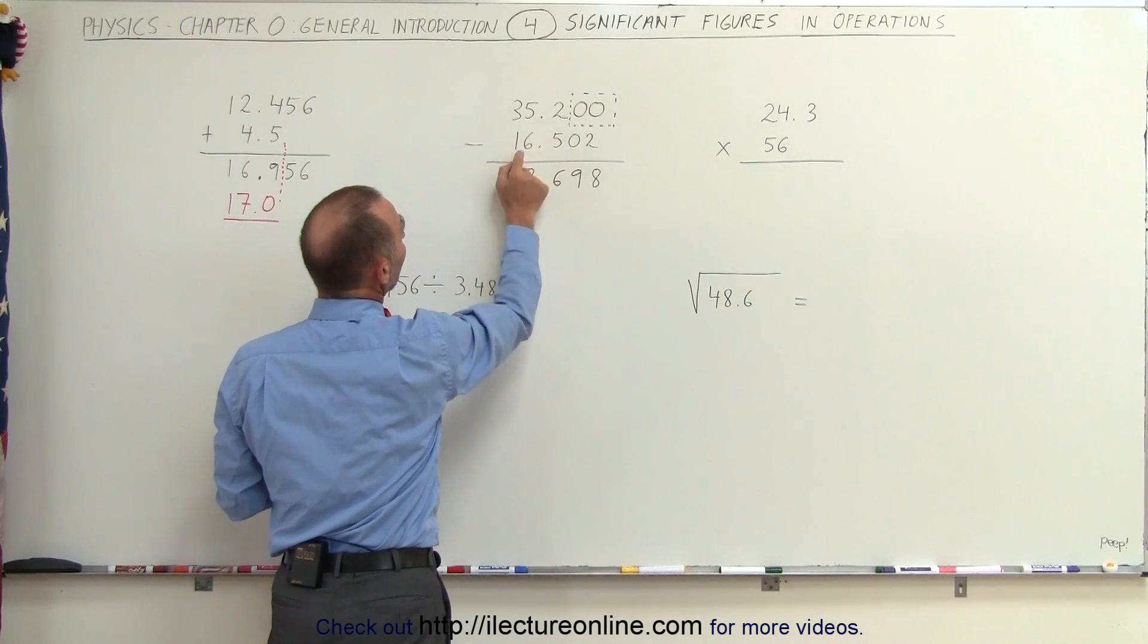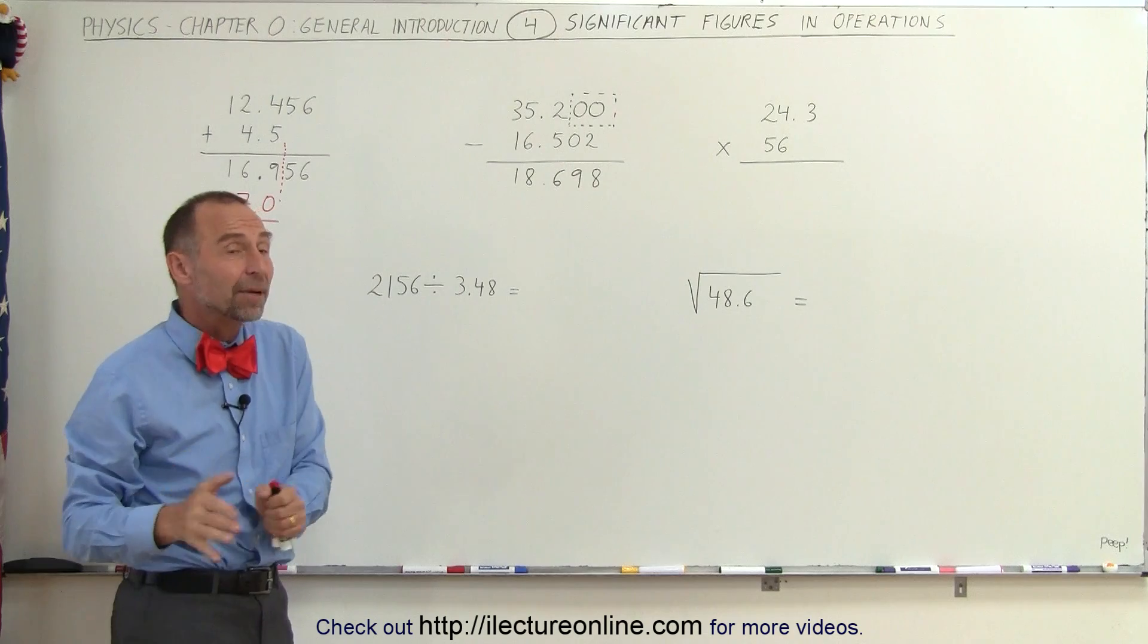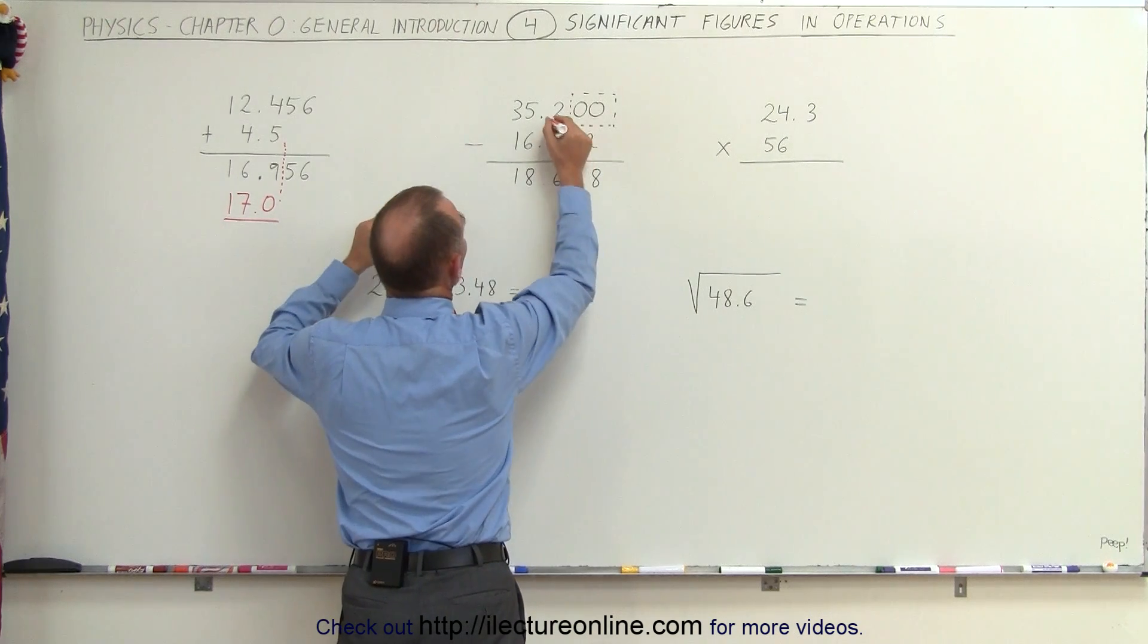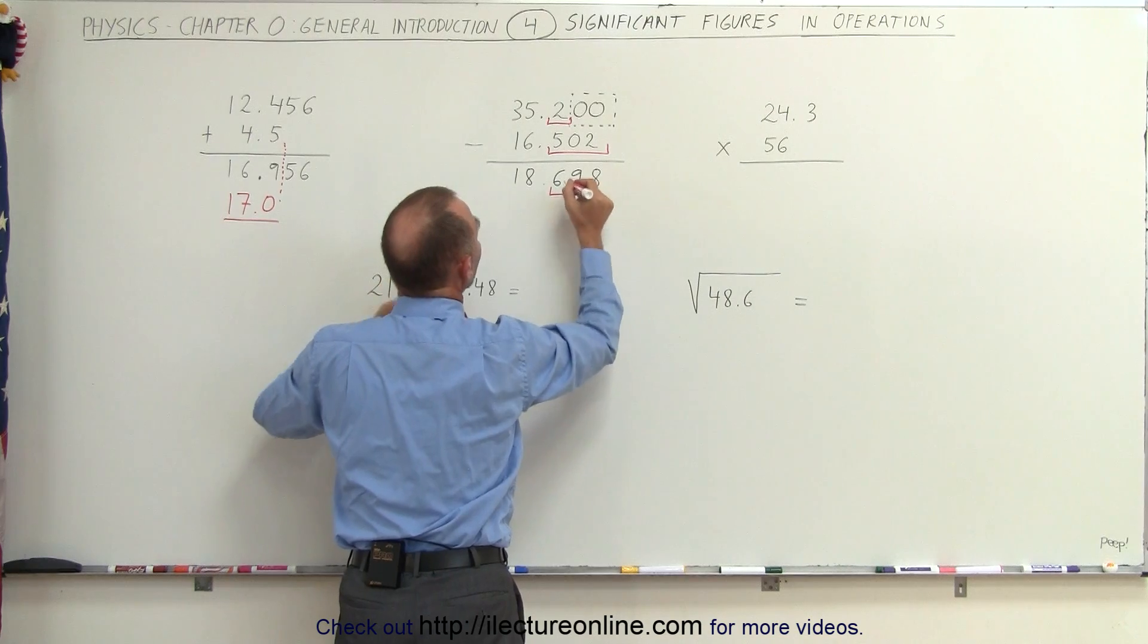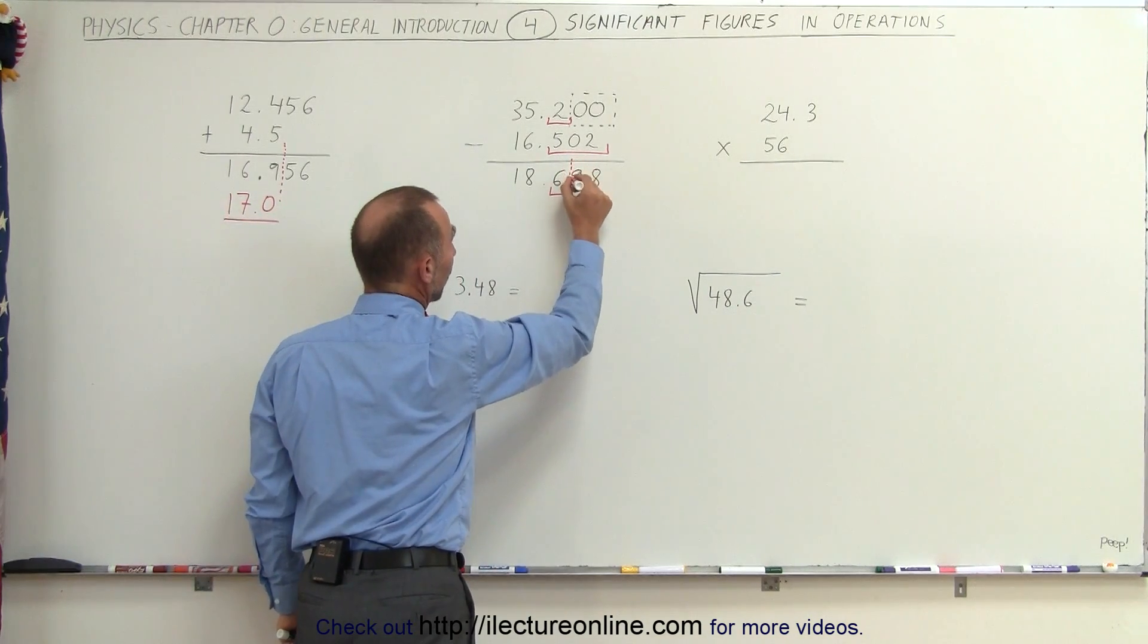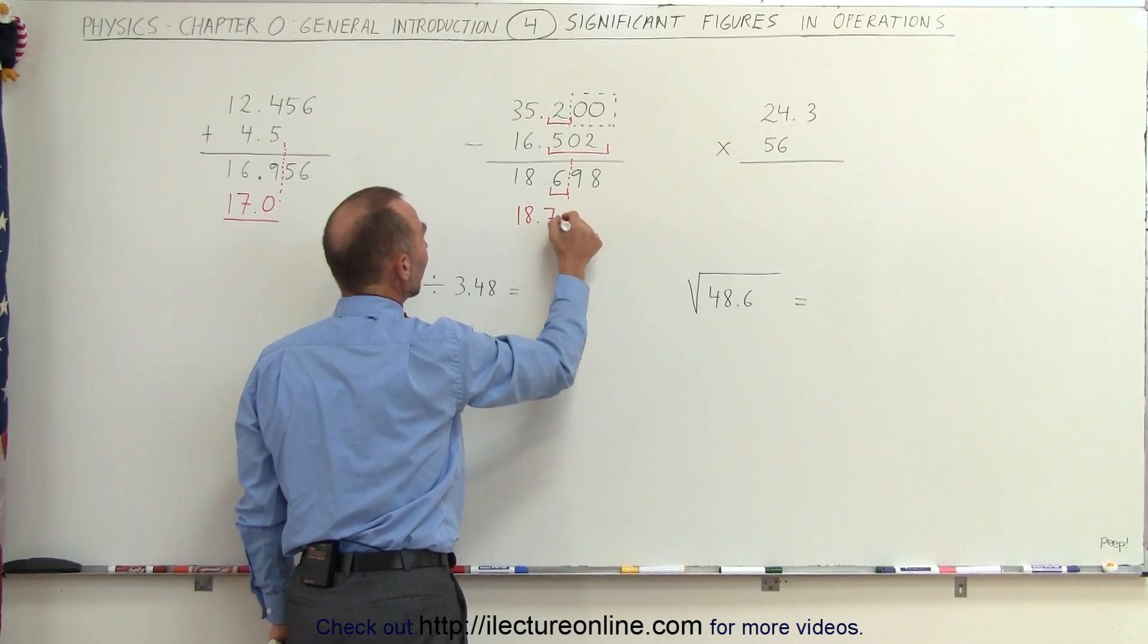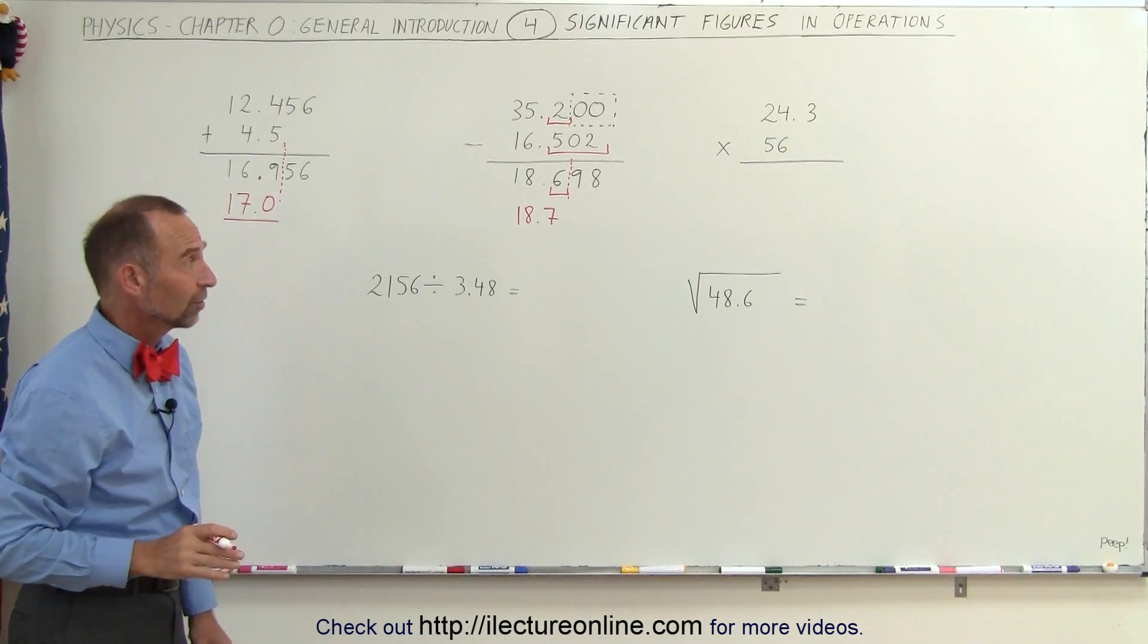So what is the proper number of significant figures here? Remember, we had 3 here. Here we had 5. How many should we have? Well, it doesn't really matter how many significant figures each of the two numbers had. It only matters how many decimal places we had. There was only one decimal place over here. There were three decimal places over here. So we should only have one decimal place right there. Again, that means we're going to cut it off at this point. But since this is bigger than 5, we should add one to here. So the answer would be 18.7. That would be the proper answer in this particular case regarding significant figures.